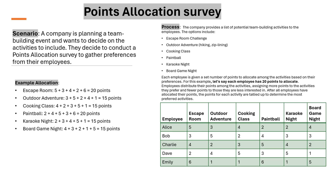In this scenario, a company is planning a team building event and wants to decide on the activities to include. They decide to conduct a point allocation survey to gather preferences from their employees. The company provides a list of potential team building activities: escape room challenge, outdoor adventure, cooking class, paintball, karaoke night, and board game night. Each employee is given a set number of points to allocate among the activities based on their preferences — for example, 20 points each.